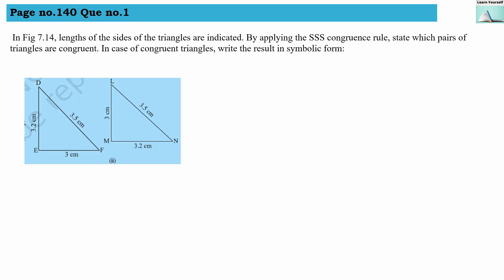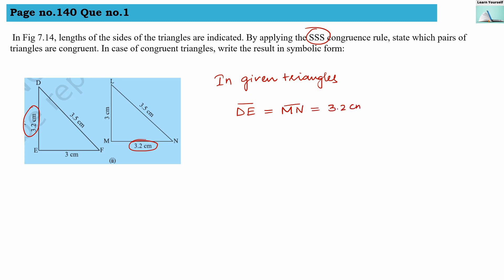Second numerical. We have to prove SSS congruence criteria as per the given details. Let us check which sides are equal. DE equals MN — they are both 3.2 cm. Second, EF equals ML — they are both 3.5 cm. Then DF equals LN — they are also both 3.5 cm.